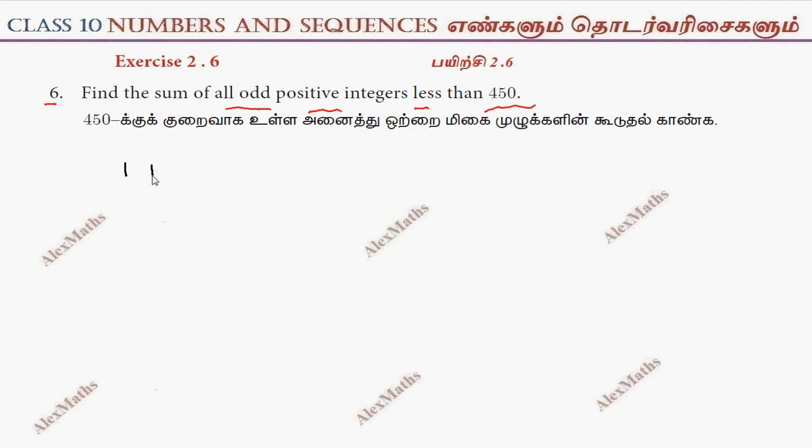So, first number 1, add the number 3, plus 5, plus dot dot dot, less than 450. 449 is the last odd positive integer less than 450.